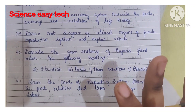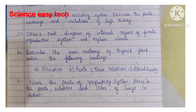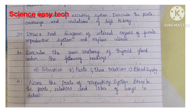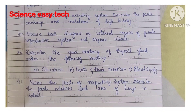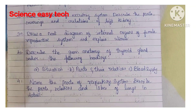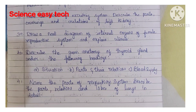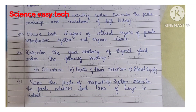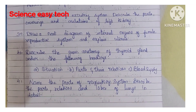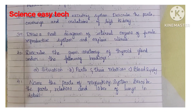Thirty-ninth question, draw a neat diagram of internal organs of female reproductive system and explain uterus. Fortieth question, describe the gross anatomy of thyroid gland under the following headings: its situation, parts and their relations, and blood supply of thyroid gland. Forty-first question, name the parts of the respiratory system and describe the parts, relations and lobes of lungs in detail.